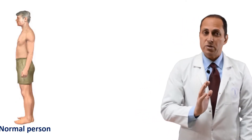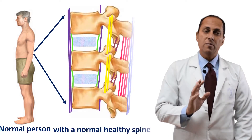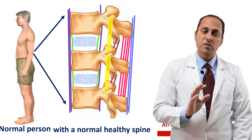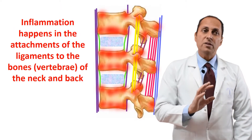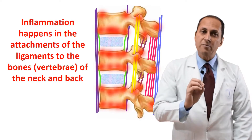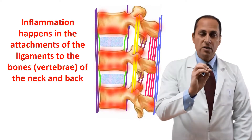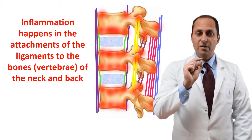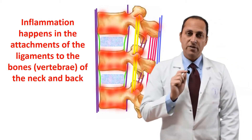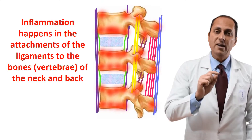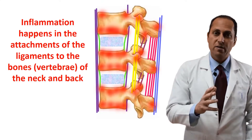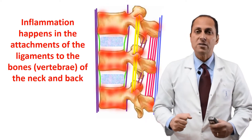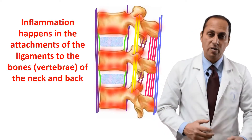Now this is a normal person and this is his vertebral column — the joints and the ligaments. An inflammation will start in this patient's joints and ligaments of the neck and back. The inflammation happens in the attachments of the ligaments to the bone — those red spots are the points where the inflammation starts. The symptoms will be pain and stiffness of the neck and back, and the patient is stiff mostly in the morning — he will tell you that his back is stiff for one or two hours until it loosens up.